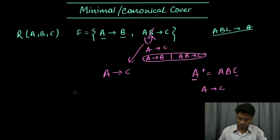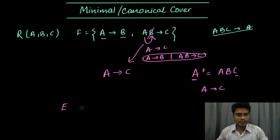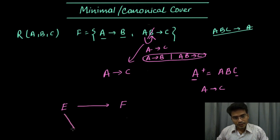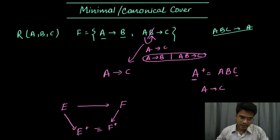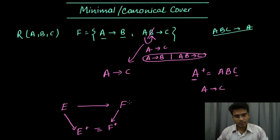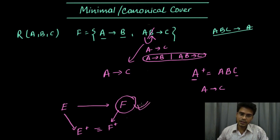This is the whole idea of minimal cover or canonical cover. For a given set of functional dependencies e, if we can reduce it to f, where e-plus — the closure of e — is equivalent to the closure of f (f-plus), then any functional dependency which was removed to form f was redundant and was not actually required. This is our minimal set of functional dependencies and we should go forward with this set.